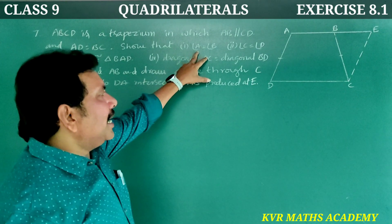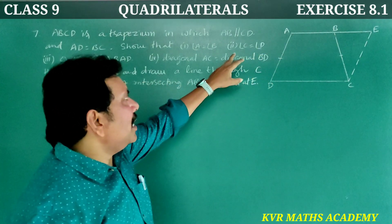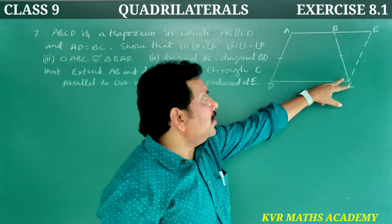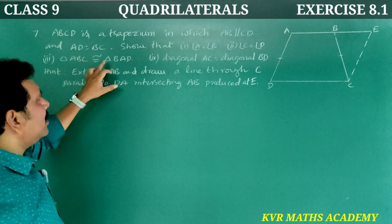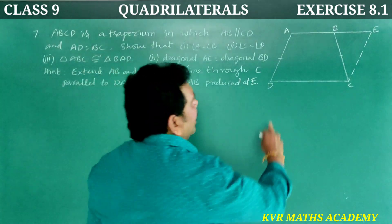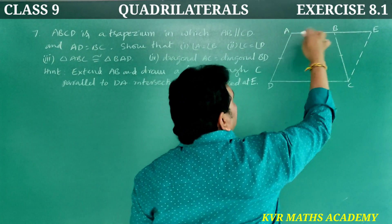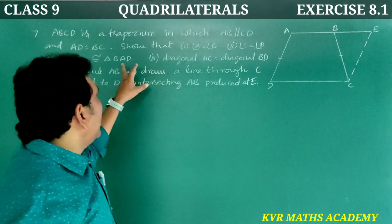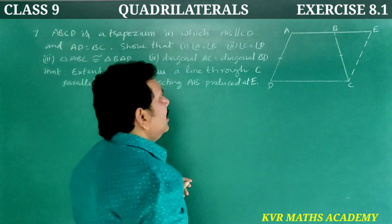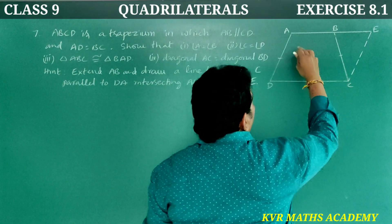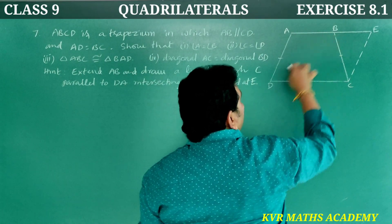What we have to show: angle A is equal to angle B, angle C is equal to angle D, triangle ABC is congruent to triangle BAD, and diagonal AC is equal to diagonal BD.